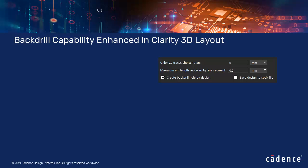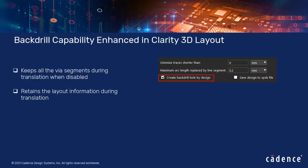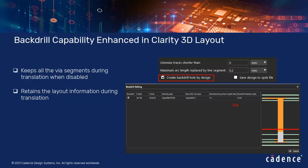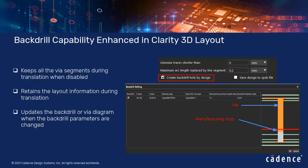The backdrill capability has been enhanced in Clarity 3D Layout. A new option, 'Create Backdrill Hole by Design,' has been added in the Translation tab of the Options dialog box. When disabled, it keeps all via segments during translation, so when you import a design containing backdrill information, the layout information is not lost. The backdrill editing dialog box has also been enhanced to dynamically update the backdrill/via diagram when the backdrill parameters are changed.